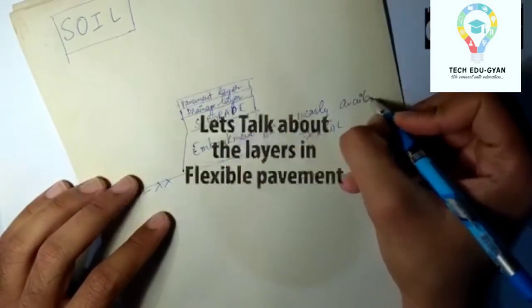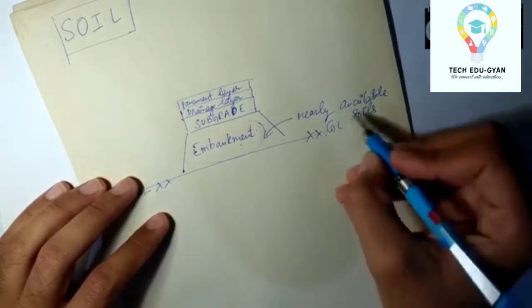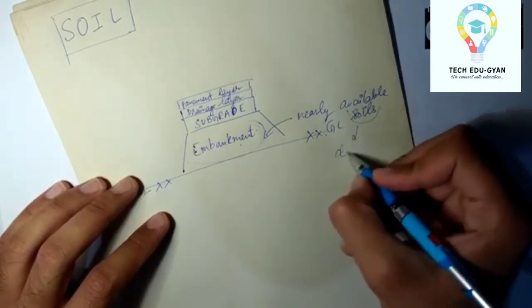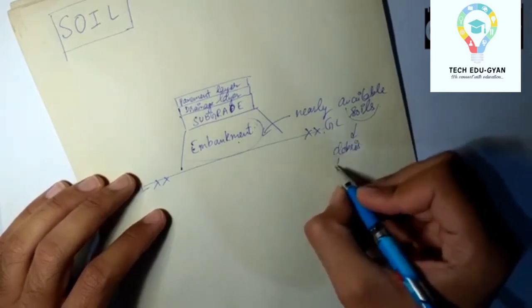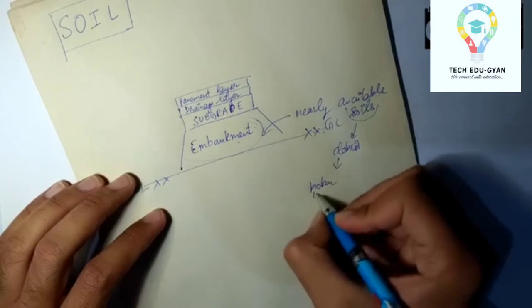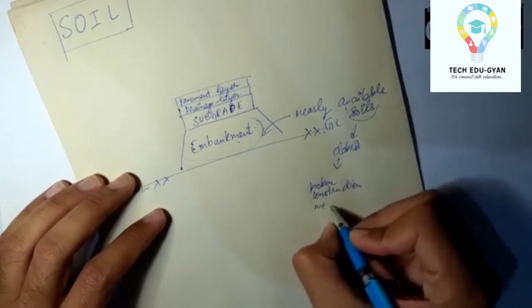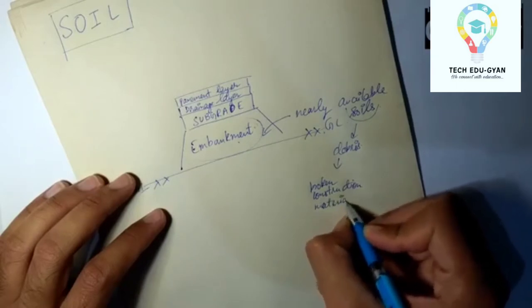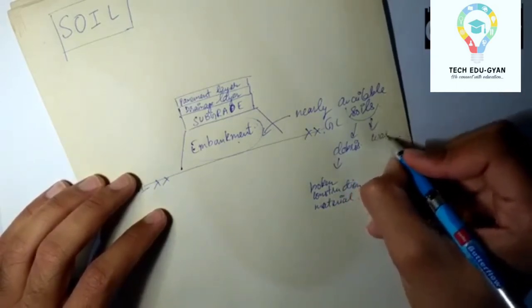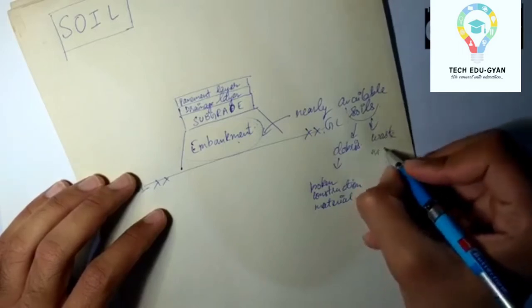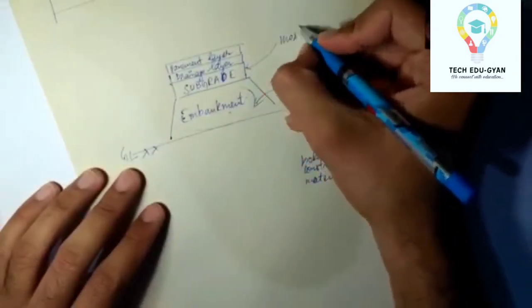Embankment can be made by nearly available soils and these soils can include debris, which is the waste or broken construction material. So this embankment layer is not made up of pure soil and can be made from nearly available soils or from excavation. It is not given that importance and this layer is made and compacted, and above it there is a subgrade layer.